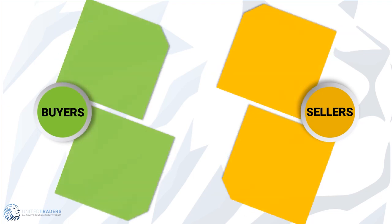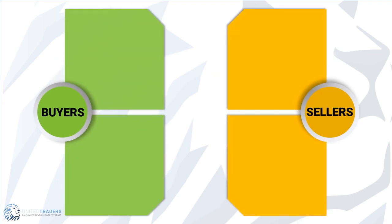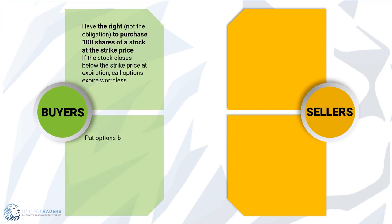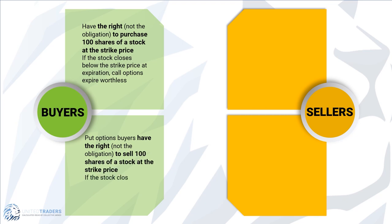Options contracts give buyers the right to buy or sell 100 share lots of a given stock at a given strike price. Call option buyers have the right, not the obligation, to purchase 100 shares of a stock at the strike price. If the stock closes below the strike price at expiration, call options expire worthless. Put option buyers have the right, but not the obligation, to sell 100 shares of a stock at the strike price. If the stock closes above the strike price at expiration, put options expire worthless.